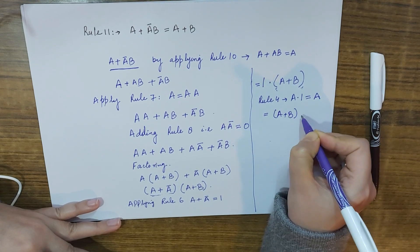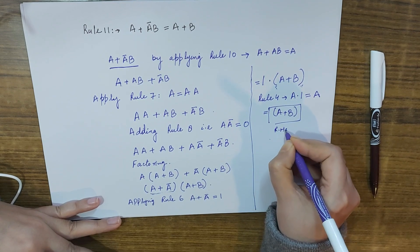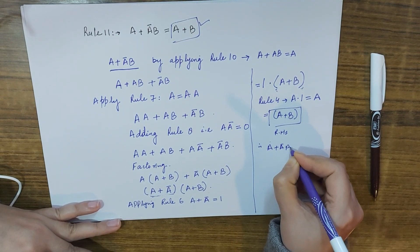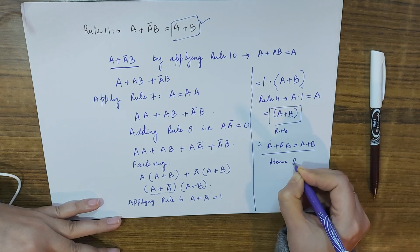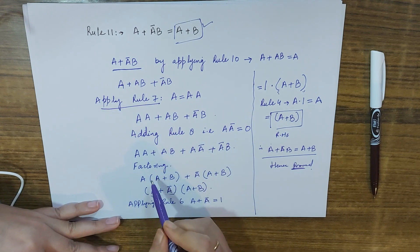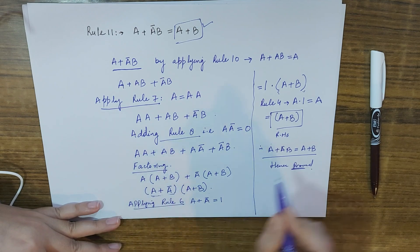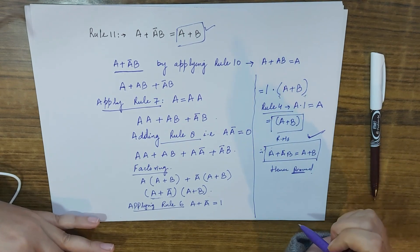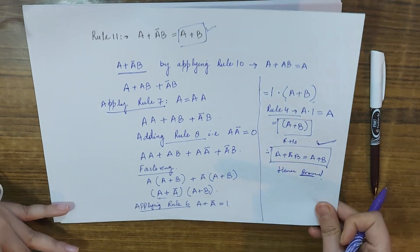This gives us A plus B, which is our right-hand side. Therefore A plus A-complement B equals A plus B — proved. We used Rule 10, Rule 7, Rule 8, the distributive law, Rule 6, and Rule 4. Now we will also prove this using a truth table.